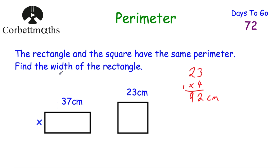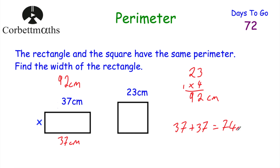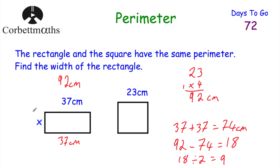Since the rectangle's perimeter is 92 cm and the length of the top is 37 cm, the base is also 37 cm. So 37 + 37 = 74 cm for the top and bottom. Subtracting: 92 − 74 = 18 cm remaining for the two sides. Since both sides are equal, 18 ÷ 2 = 9. The width of the rectangle is 9 centimetres.